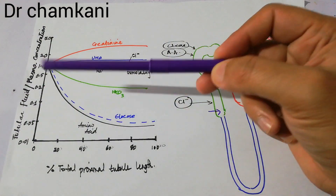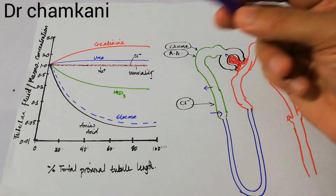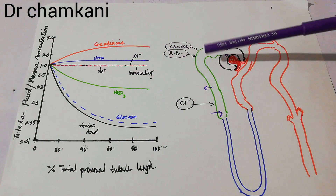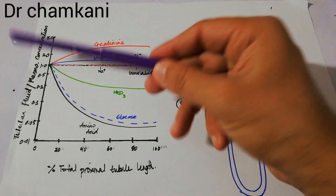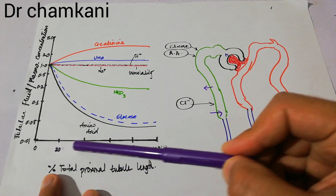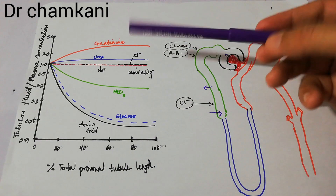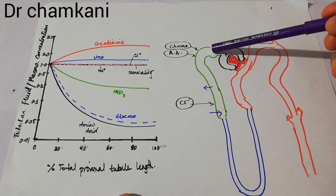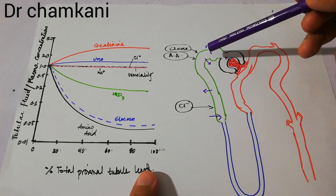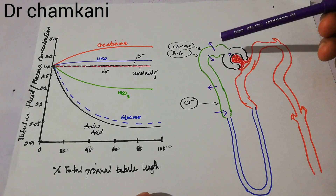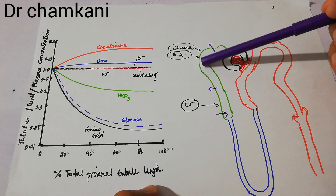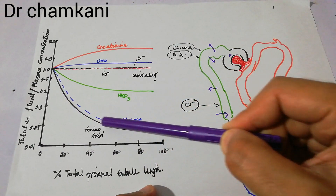The y-axis shows the concentration of something in the tubular fluid divided by its concentration in the plasma. In the case of sodium, the concentration along the length of the proximal tubule remains the same as its concentration in the plasma, so its curve remains straight at the level of 1 throughout the proximal tubule. If you compare with amino acids, as they enter they are being reabsorbed into the blood, and their concentration in the tubule decreases as compared to plasma. Along the length of the proximal tubule, their concentration keeps on decreasing towards the end.